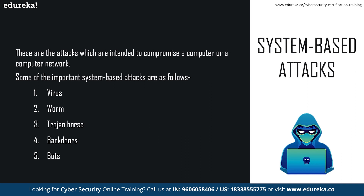The next category is system-based attacks — attacks intended to compromise a computer or computer network. A virus is a type of malicious software program that spreads throughout computer files without the user's knowledge. It is a self-replicating malicious computer program that makes copies of itself into other programs when executed. Then we have worms — a type of malware whose primary function is to replicate itself and spread throughout the computer. Worms work similarly to viruses but often originate from email attachments that appear to come from trusted senders.